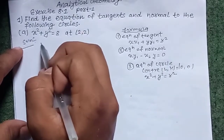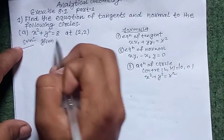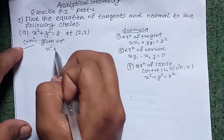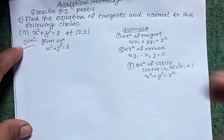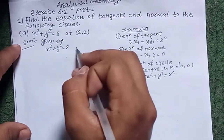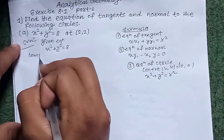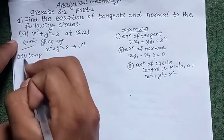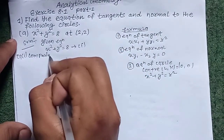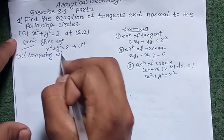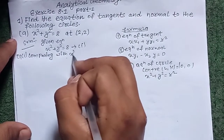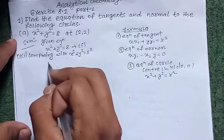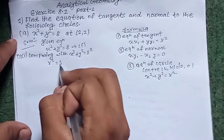The given equation is x² + y² = 8. Comparing with equation 1: x² + y² = r², so r² = 8.